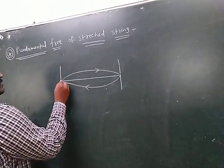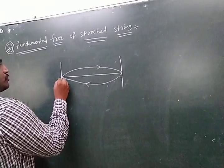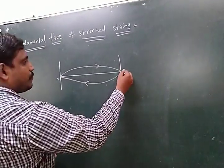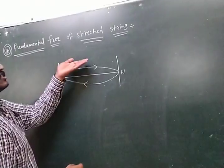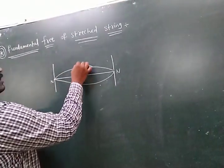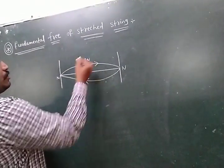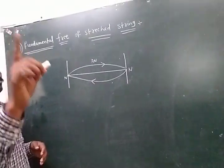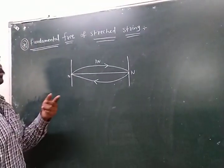A fixed point is called a node. The maximum displacement of the particle in the middle is called an antinode. In one loop, there is one antinode and two nodes.